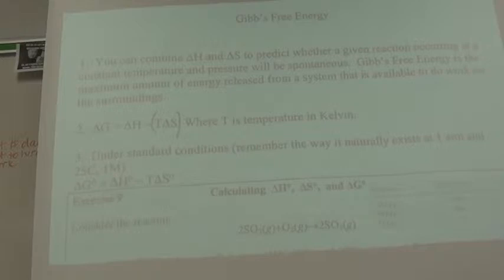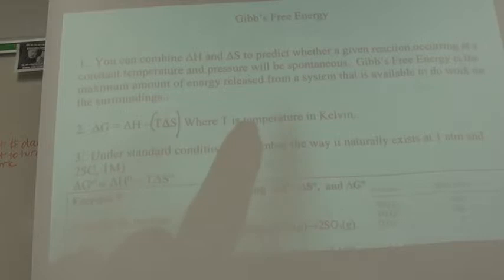Because Gibbs free energy determines absolutely positively whether something is thermodynamically favored. Last Friday, I gave you this equation really quick. This is Gibbs free energy equation, where delta G is equal to the enthalpy minus the entropy. When you multiply the entropy times the temperature, it must be in Kelvin.